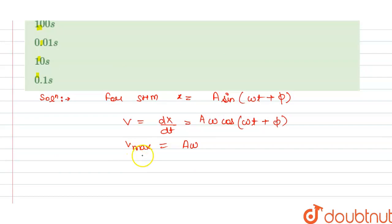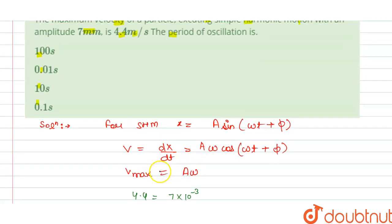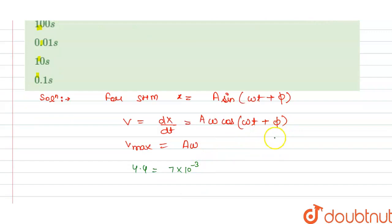So we can put here: this is 4.4 and this is 7 × 10^-3 as it is given to us in mm, so we converted it into meters per second. So we can write here our amplitude is 7 mm, that is equal to 7 × 10^-3 meters.